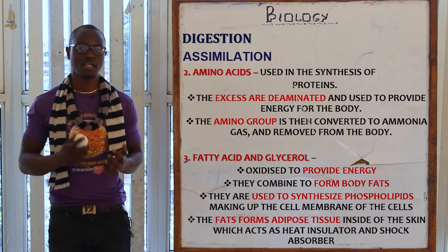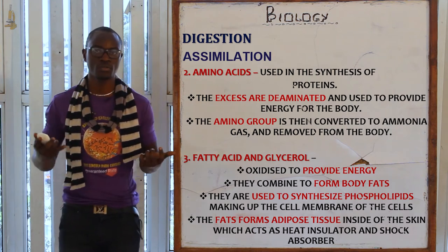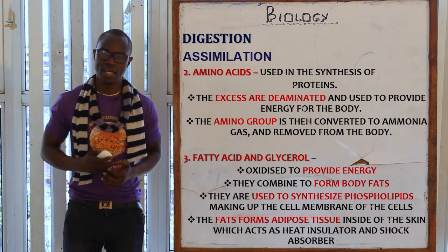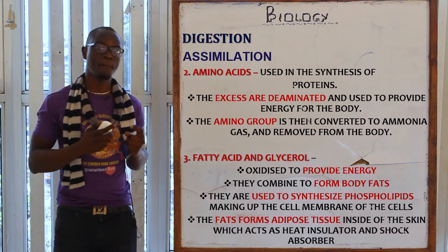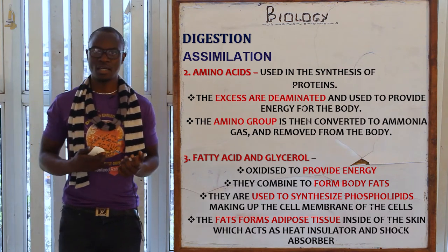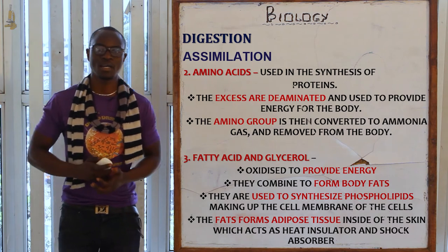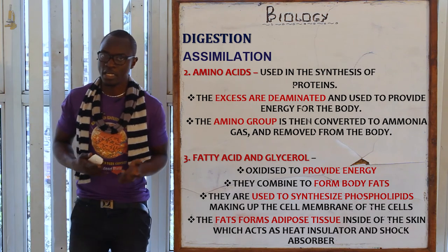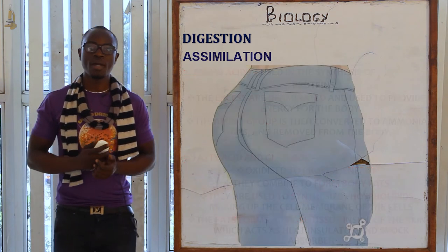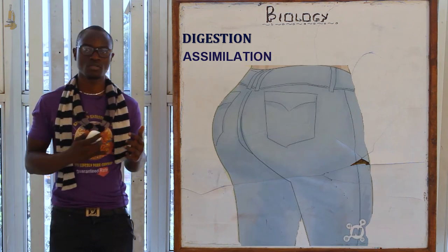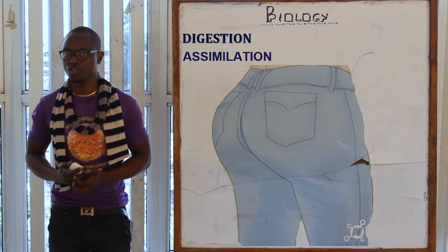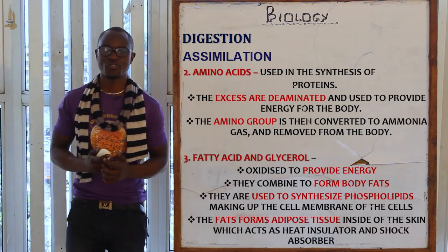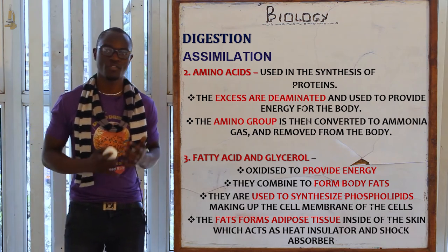Fatty acids and glycerol are other products assimilated in the body, where they are oxidized to provide energy. They also combine to form body fats, forming the adipose tissue which acts as a heat insulator and shock absorber. For example, the buttocks contain most of this tissue, acting as shock absorbers when sitting. Fats are also used to synthesize phospholipids that make up the cell membrane.